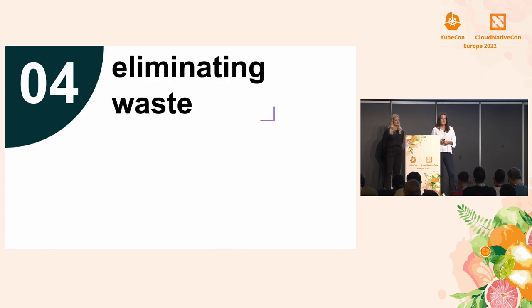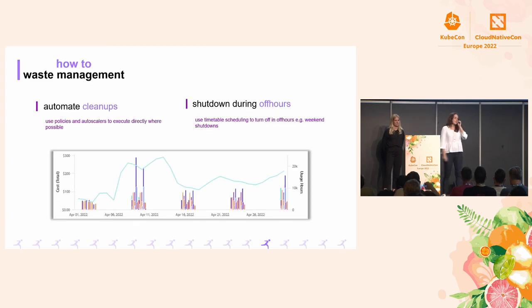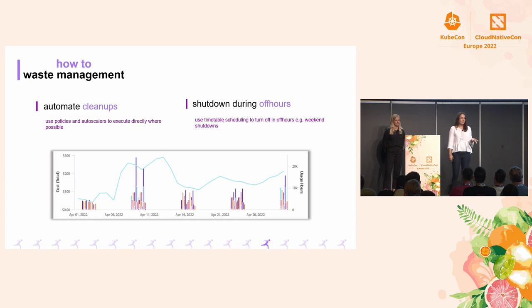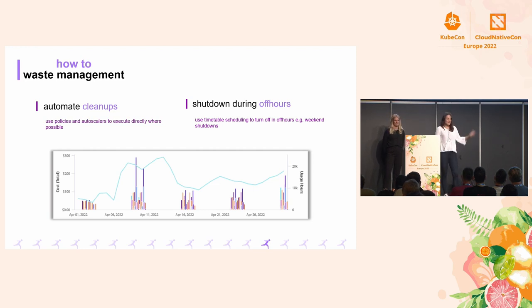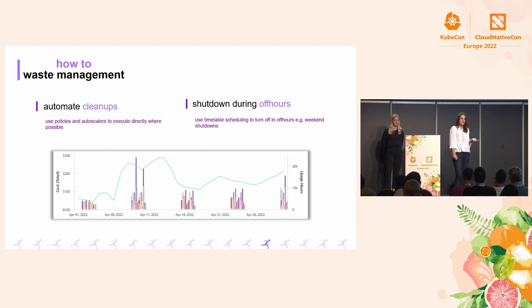The fourth point is eliminating waste. Autoscalers do some of that, yes — but there is more. You could add policies that shut down environments when you don't need them, like a dev environment or a test environment — shut down those non-critical workloads over the weekend or during off hours. Now some of you might say, okay, my dev environment is just $50, who cares? But take a look at the picture at the bottom of the slide — every single colorful bar represents one engineer saying 'it's just $50.' At the end of the day, it's all about the sum of the costs it produces.